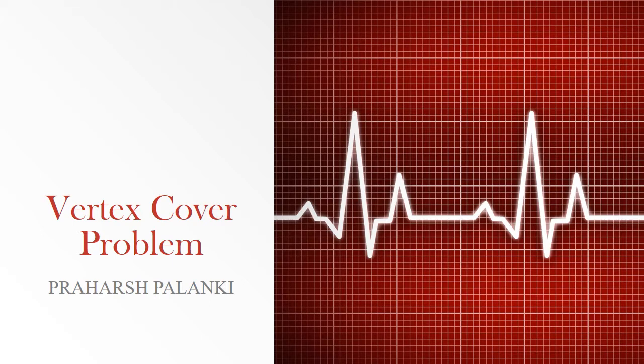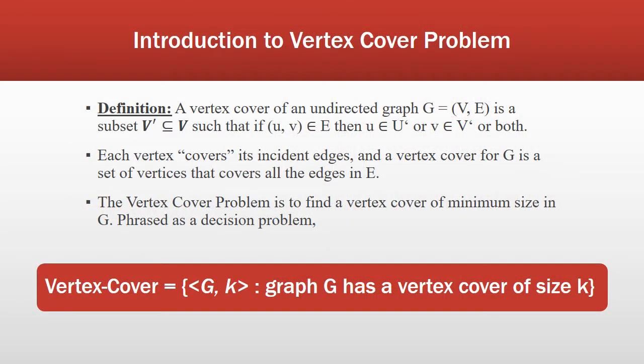Hello everyone, this is Prahash Falanki and today I will be covering the topic of the vertex cover problem and we are going to see how we know that it's NP-complete. A vertex cover of an undirected graph is a subset of its vertices such that for every edge (u, v) of the graph, either u or v — or both — belongs to that particular vertex cover. Although the name is 'vertex cover,' the set covers all the edges of the given graph.